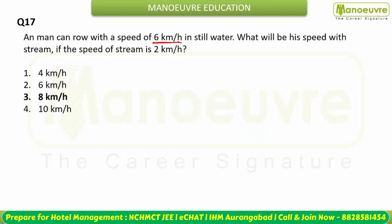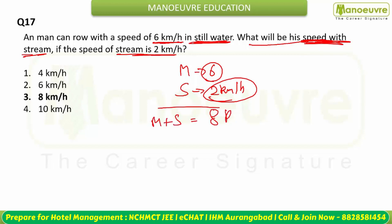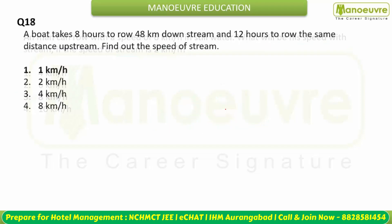A man can row at 6 km/h in still water; the speed of the stream is 2 km/h. Speed with the stream = 6 + 2 = 8 km/h. If asked against the stream, it would be 6 − 2 = 4 km/h, but here the answer is 8 km/h.